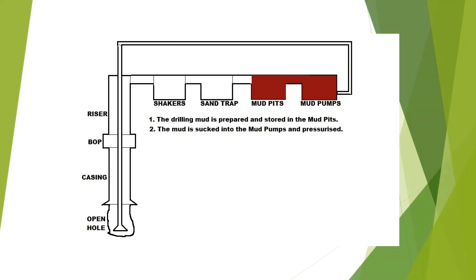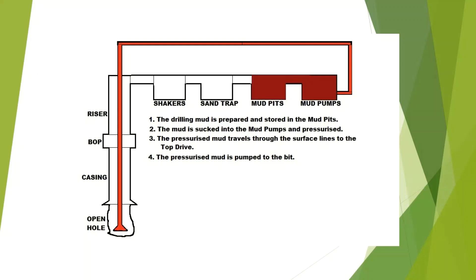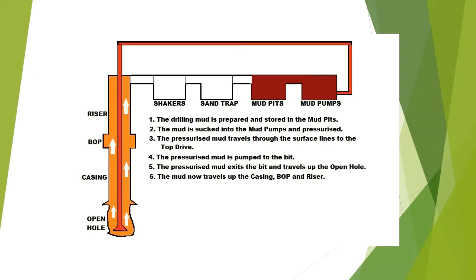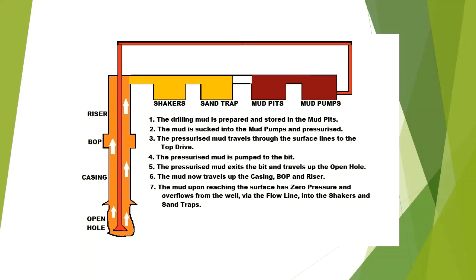The drilling mud is prepared and stored in the mud pits. Gravity and suction pumps suck the mud into the mud pumps and pressurize it. The pressurized mud travels through the surface lines to the top drive or top of the string, and is pumped into the bit. The mud exits the bit and travels up the open hole, lubricating the bit and carrying the cuttings out. The mud then travels up the casing, blowout preventer, and riser. Upon reaching the surface it has zero pressure and overflows from the well via the flow line into the shakers, where cuttings are removed, and into the sand traps. The mud overflows back into the mud pits and the circulation repeats.